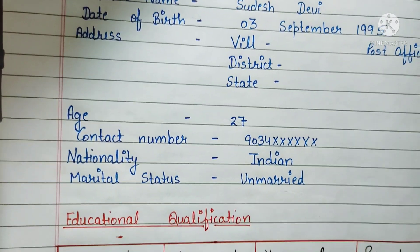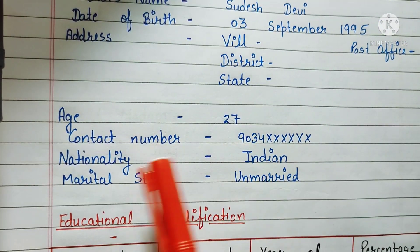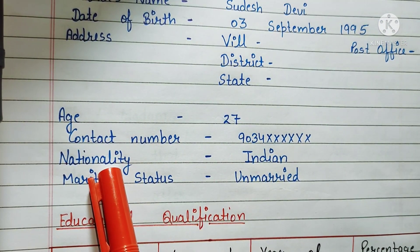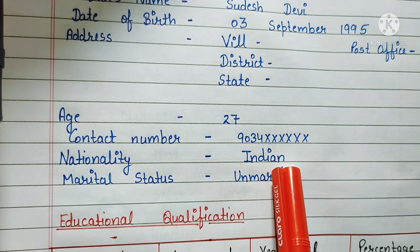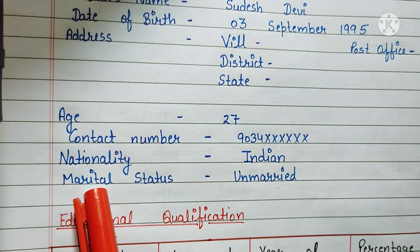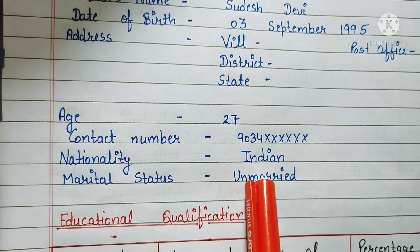After that you have to write your age and your contact number. Then you have to write your nationality, and after nationality you have to write the marital status — like whether you are unmarried or married.